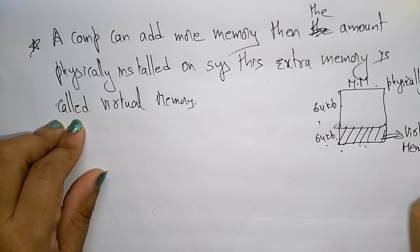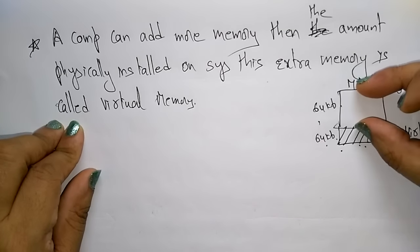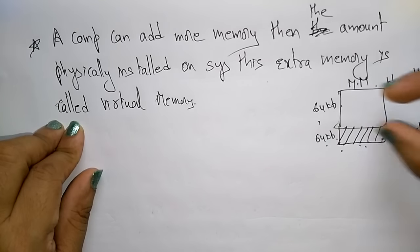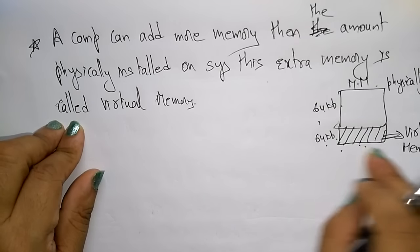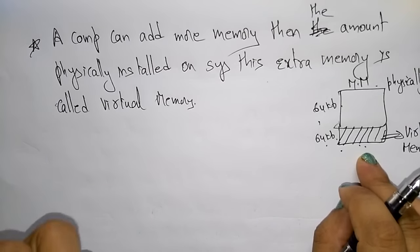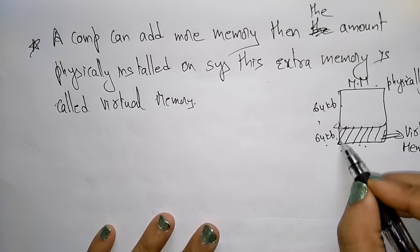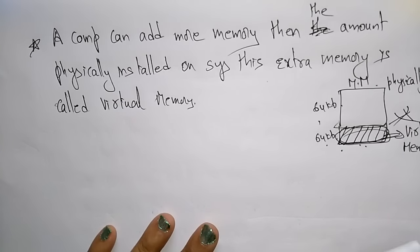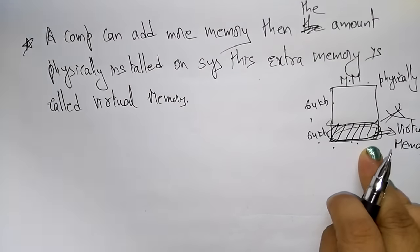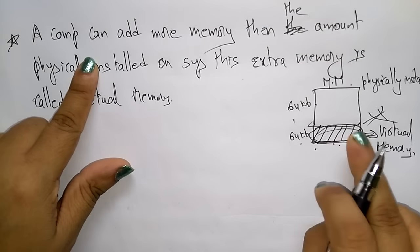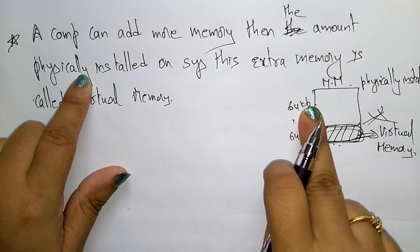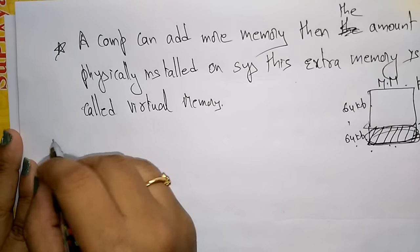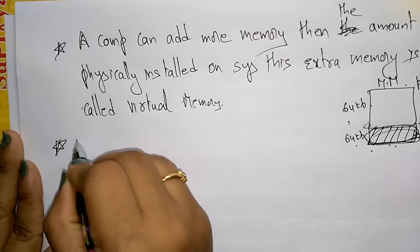Virtual memory is not real. Only the 64 KB physically installed is real main memory. The virtual memory stores temporary data and is completely erased when the system is off. Paging is a memory management technique in which the process address space is broken into blocks of the same size.